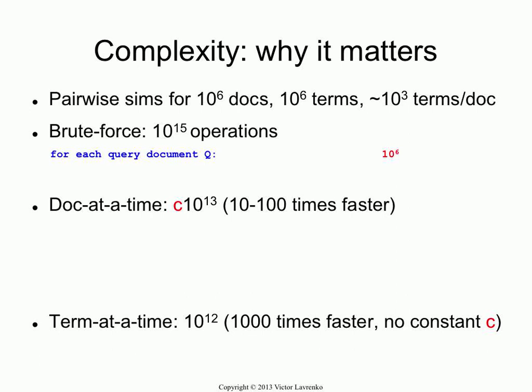So what would it look like? For each query document — and I have a million of them — for each potential document that could match — again, a million of them — compute the similarity. And the similarity, assuming I'm doing it efficiently using linear merge, that would take on the order of a thousand operations, because both documents are a thousand words long on average. So overall the complexity is going to be 10^15, because it's 10^6 times 10^6 times 10^3.